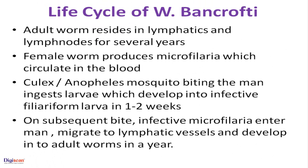Life cycle of Wuchereria bancrofti: The adult worm resides in lymphatics and lymph nodes for several years. The female worm produces microfilaria which circulate in the blood. A Culex or Anopheles mosquito biting the man ingests larvae, which develop into infective filariform larvae in one to two weeks. On a subsequent bite, infective microfilaria enter man, migrate to lymphatic vessels, and develop into adult worms in a year.